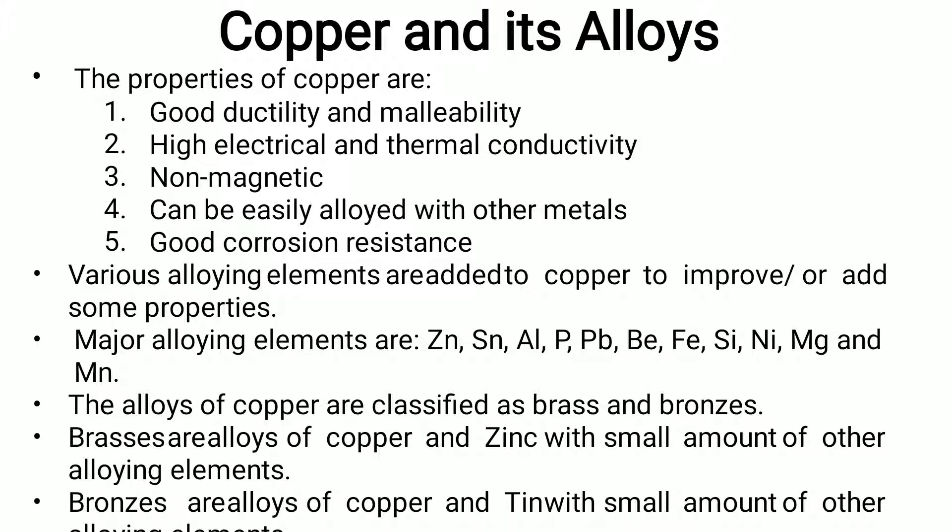Copper has good corrosion resistance. Various alloying elements can be added to copper to improve or add properties. The major alloying elements are zinc, tin, aluminum, phosphorus, lead, beryllium, iron, silicon, nickel, and magnesium. The alloys of copper are classified as brass and bronze. Brasses are alloys of copper and zinc with small amounts of other alloying elements.